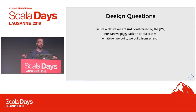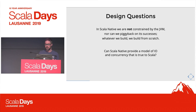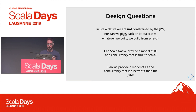So the design questions for us: we can't piggyback on what worked for the JVM, but we also aren't constrained by it — we can start over from scratch. The question for me is whether Scala Native can provide a model of I/O and concurrency that's more true to Scala than the JVM ever was. Scala without the Java-isms can be more Scala.